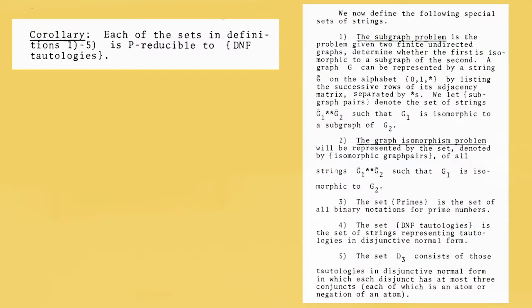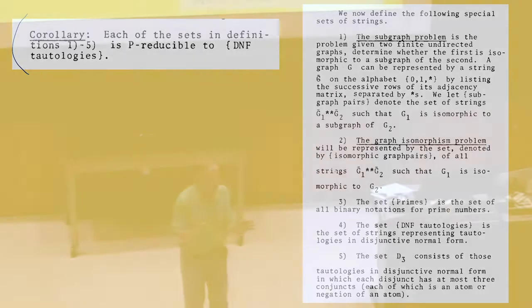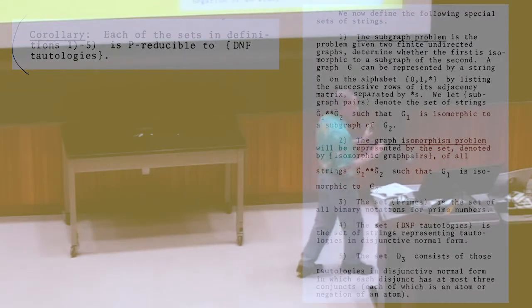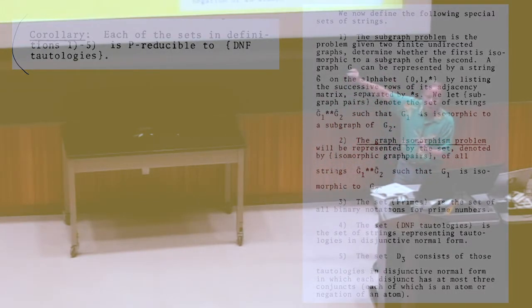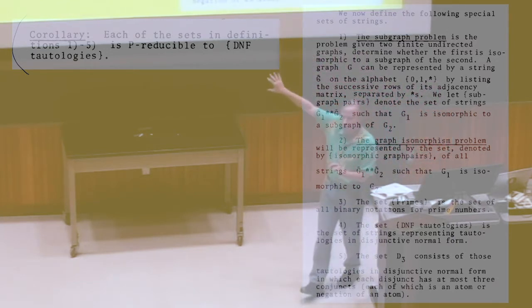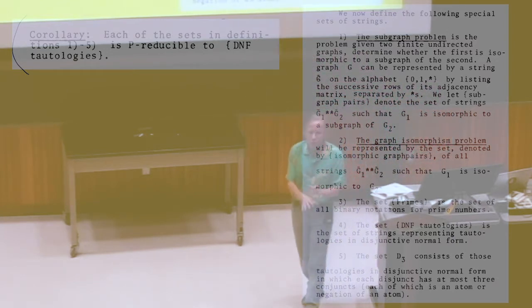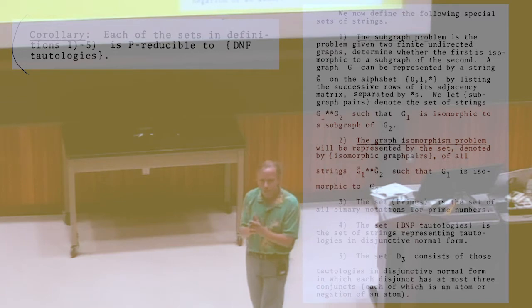At the time Cook did this, people didn't know what NP was. There was no class NP. People weren't saying it's obviously interesting to show something is NP-hard. So Cook said, here are some problems that are polynomially time-reducible to this DNF tautologies problem — to motivate why the result was interesting.